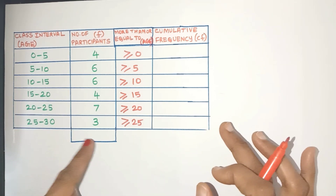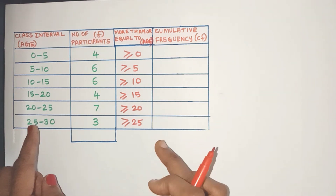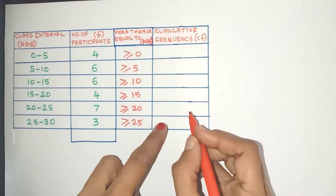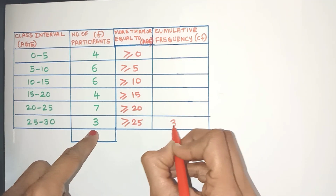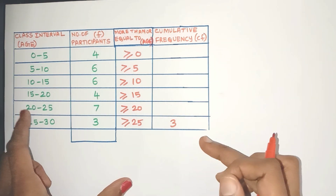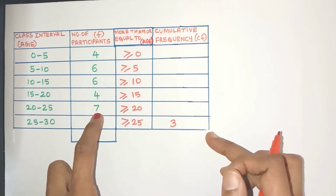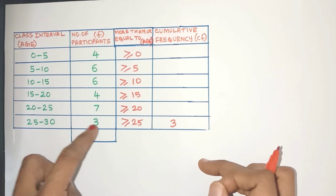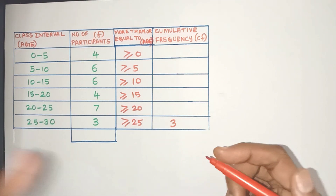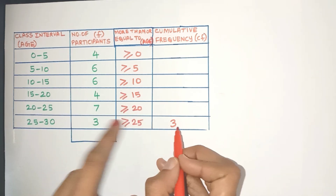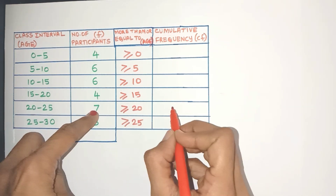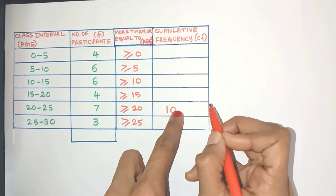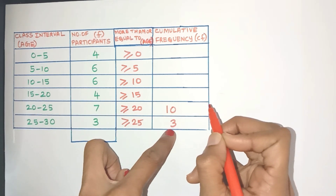For 25 to 30 years, there are 3 participants, which means 3 participants have ages greater than or equal to 25. Are there any other participants whose age is greater than or equal to 25? No. So the CF value will be directly equal to the frequency value. Now for 20 to 25, there are 7 participants, so 7 participants have ages greater than or equal to 20. But those 3 participants with ages greater than or equal to 25 will automatically also have ages greater than or equal to 20, so we need to add those 3 to 7. So 10 will be the participants greater than or equal to 20. The current CF is equal to the current frequency plus the previous CF value.